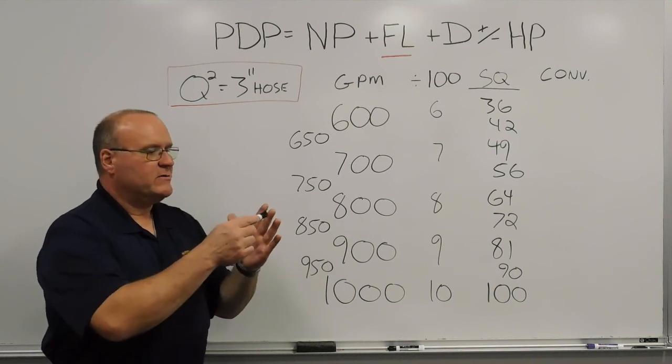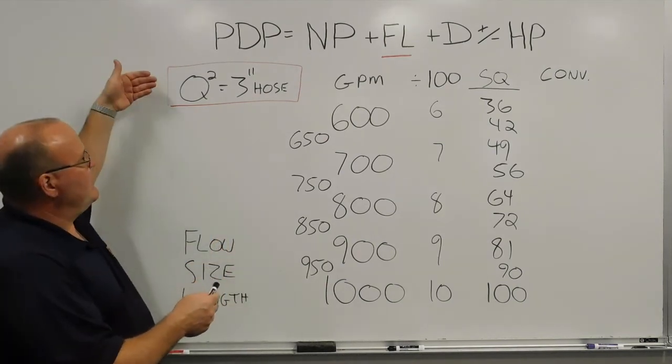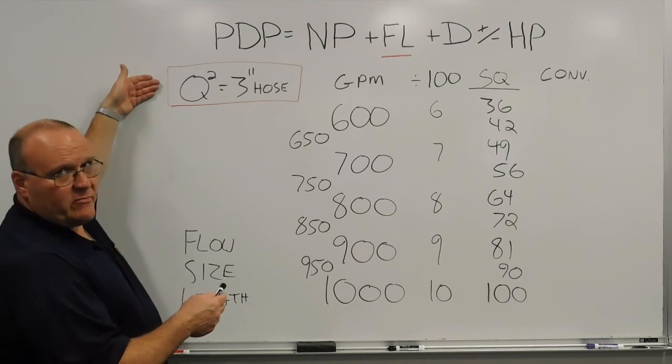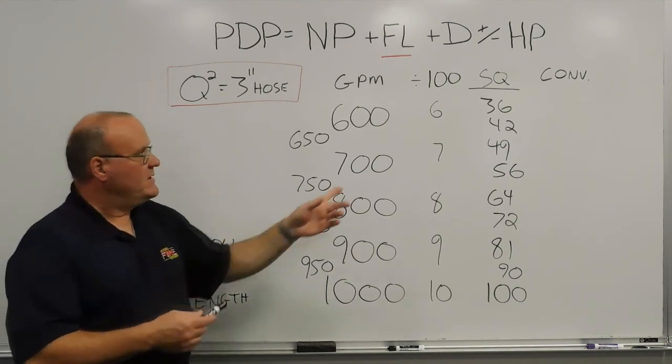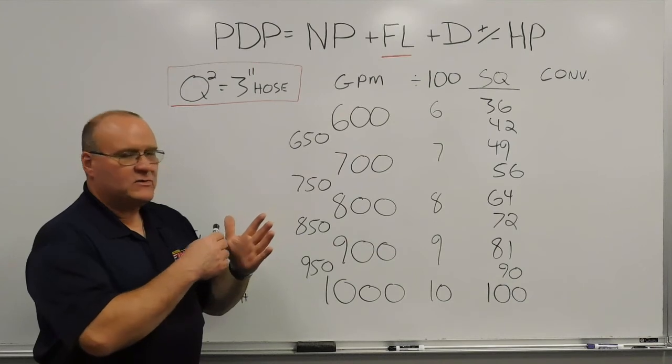you'd have 100, 200, 300, 400, 500 and to get to a 3 inch friction loss number for every 100 feet, you would simply divide by 100 and then square that number.